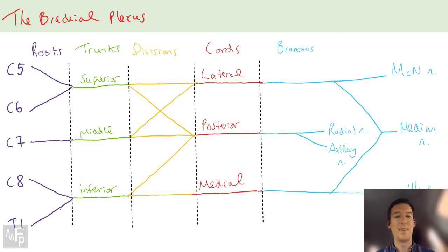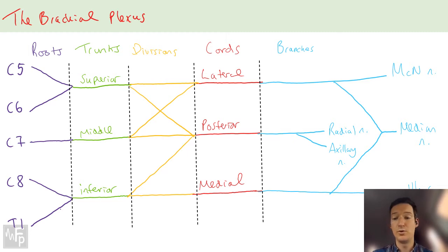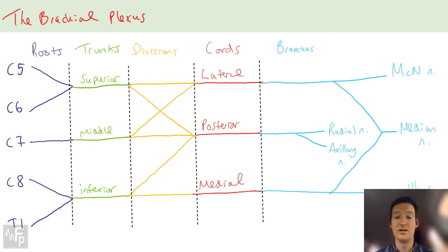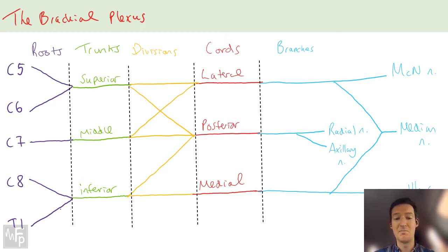From the lateral cord, you've got the musculocutaneous nerve and a portion of the median nerve. From the medial cord, you've got the ulnar nerve and the other portion of the median nerve. From the posterior cord, you've got the radial and axillary nerves. I know there are lots of other nerves coming off, but I think this is the most basic, simple version of the brachial plexus. You don't need to add suprascapular nerve from the superior trunk or the long thoracic nerve from the roots - this simple version in 10 seconds is enough.